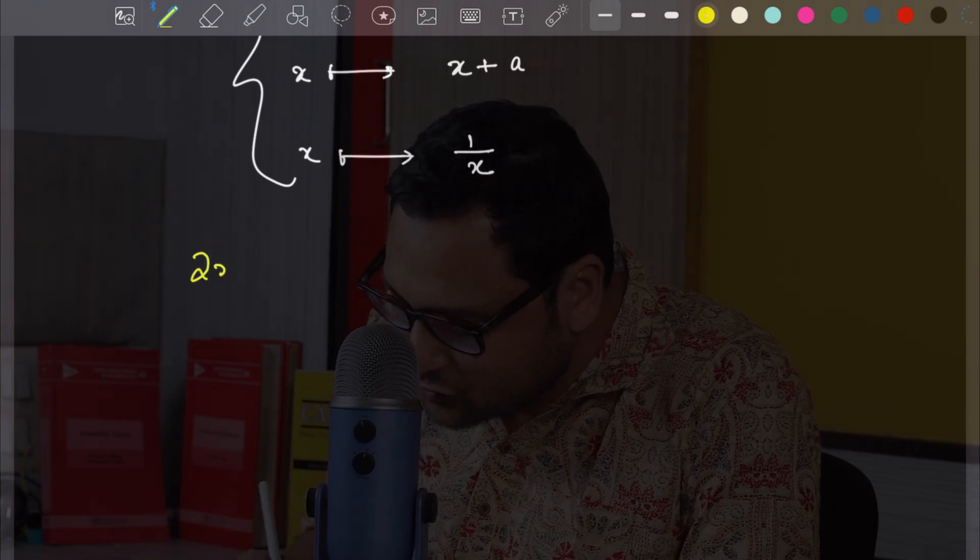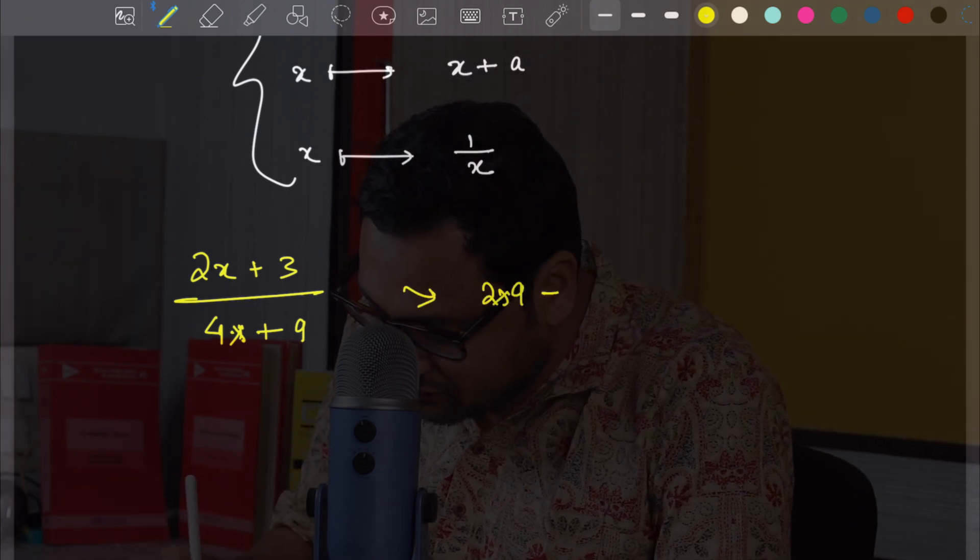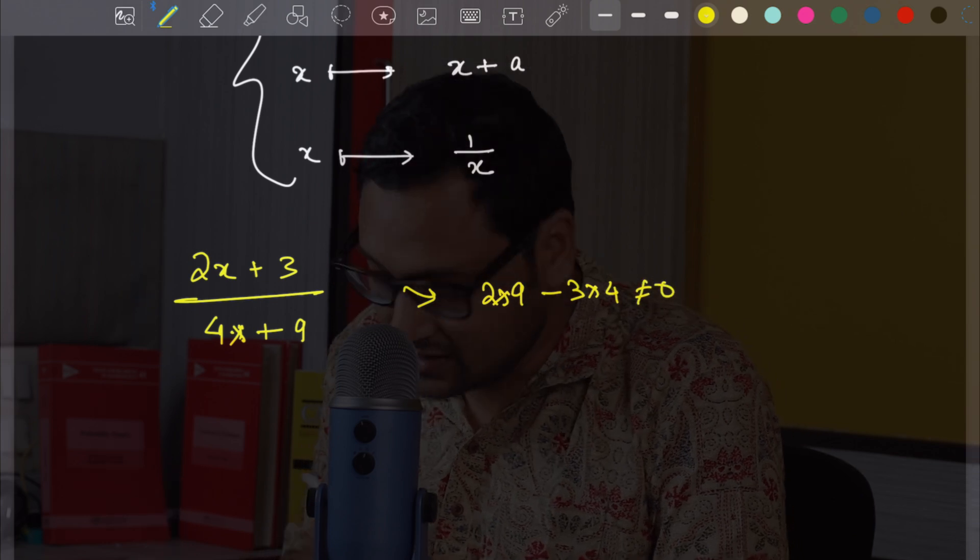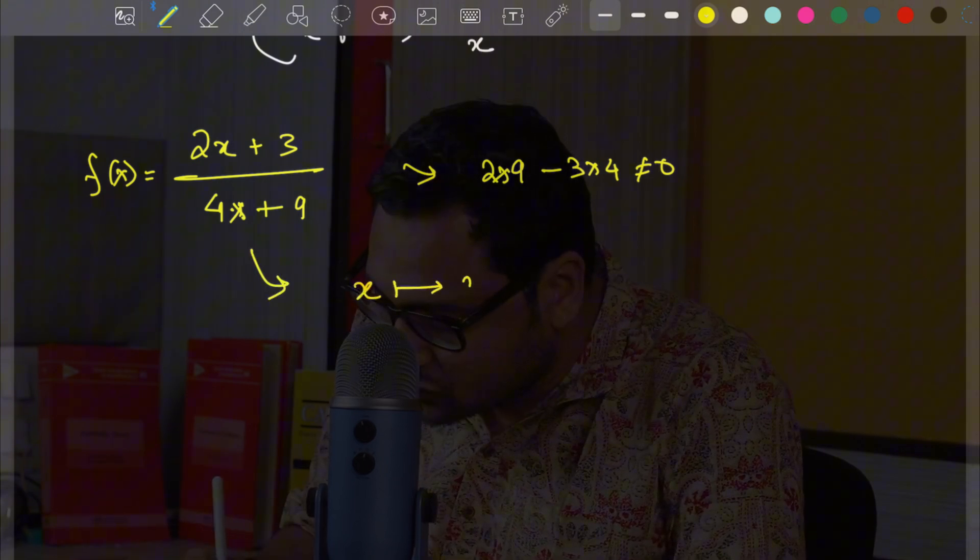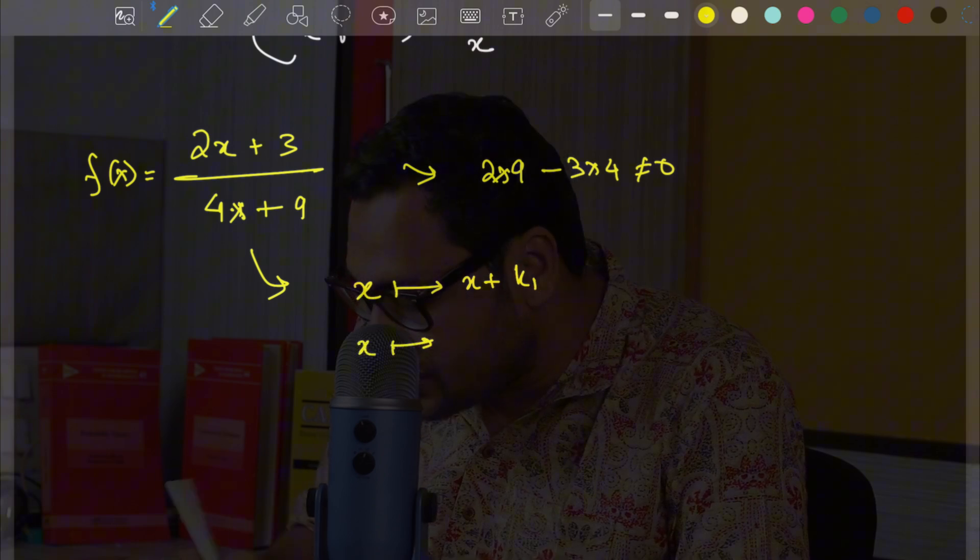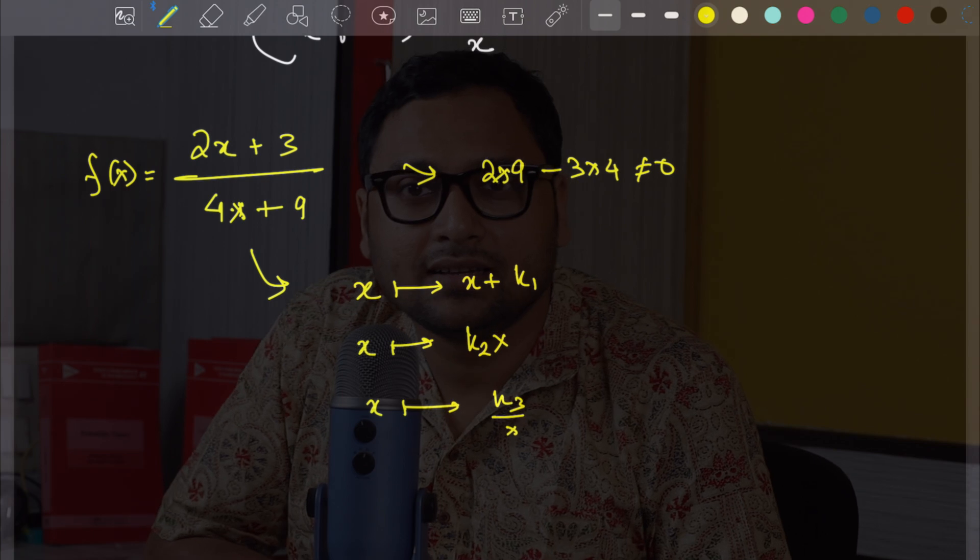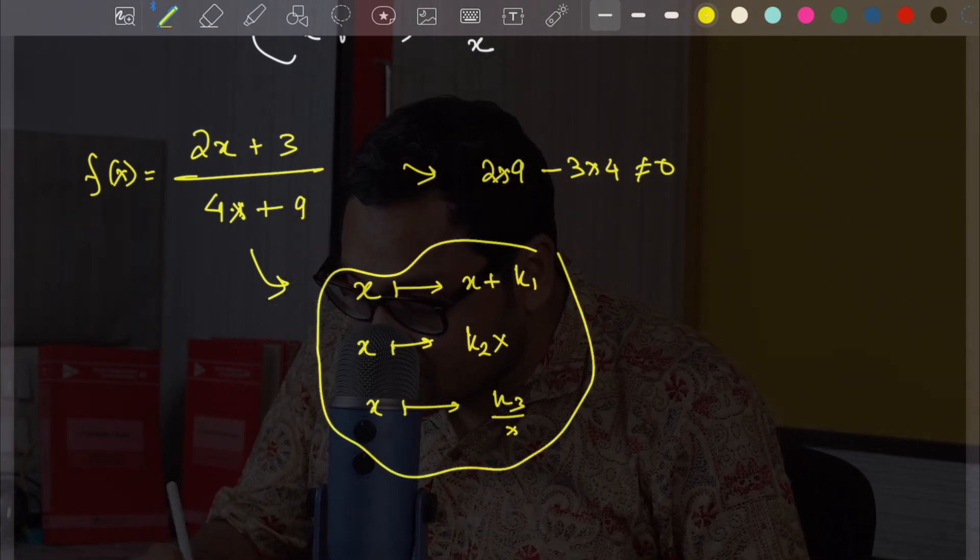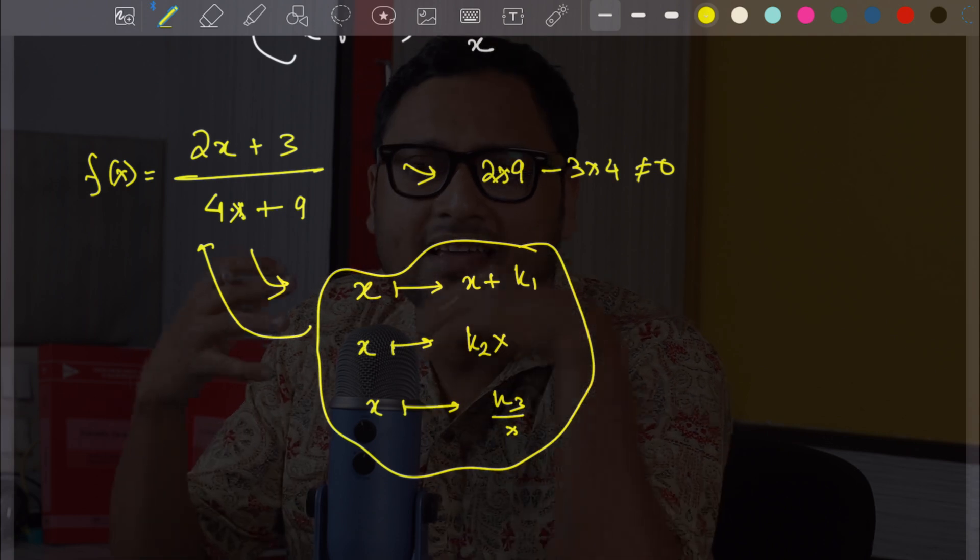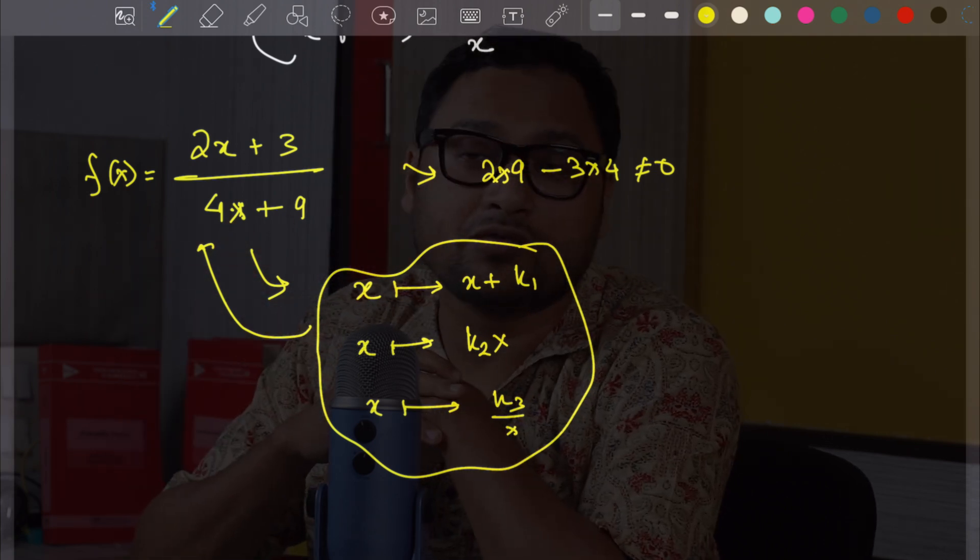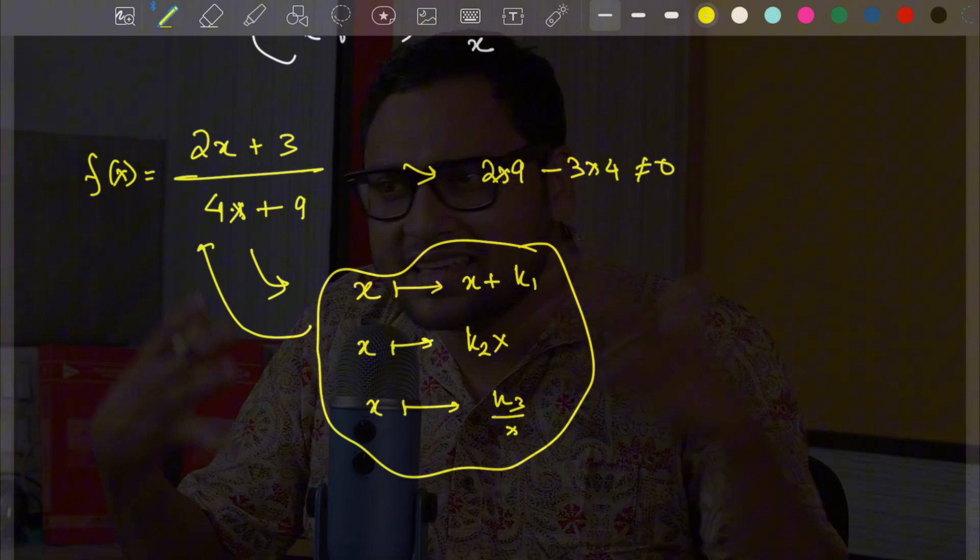So, for example, if I have 2X plus 3 divided by 4X plus 9, first check it is a projective transformation. Of course, 2 times 9 minus 3 times 4 is not equal to 0. So, can you write this function as a composition of X going to X plus K1, X going to K2 X, some constant times X, and X going to K3 by X? Only these three transformations together creating this 2X plus 3 divided by 4X plus 9. By composition of functions, can you do it? If you can, put it in the comment section. Tell me how we can write 2X plus 3 divided by 4X plus 9 using a composition of these functions. You see, we are already in the research domain. We are already thinking about things which are a little bit more complex.